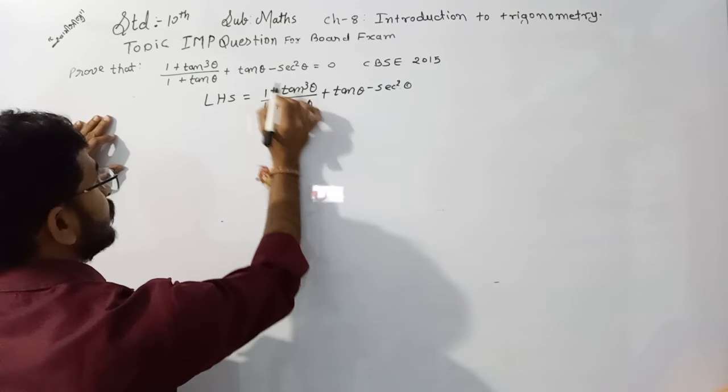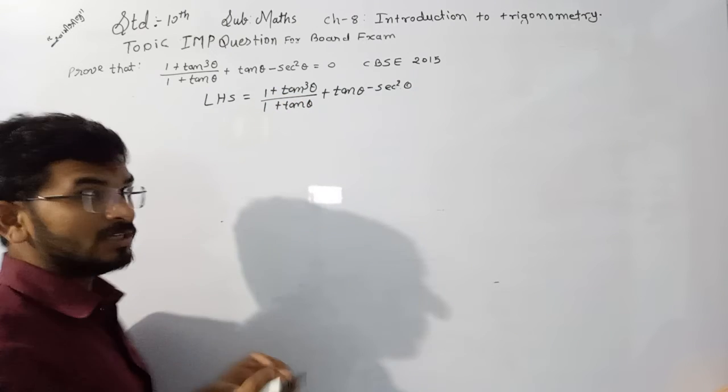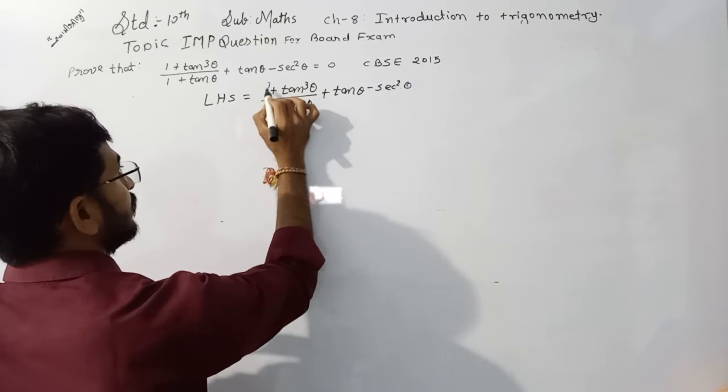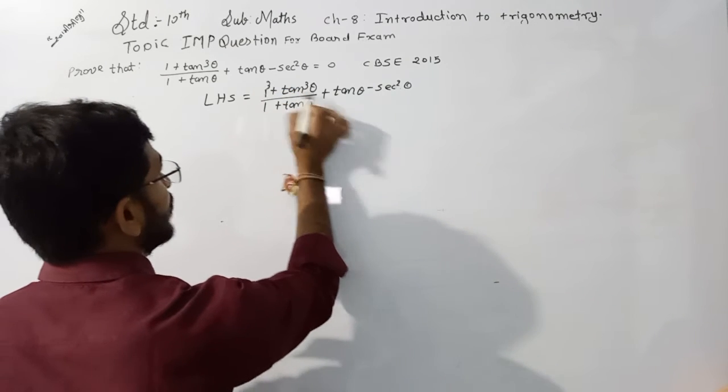First of all, for 1 plus tan cube theta, we take the cube root. Actually, cube of 1. So we write 1 cube plus tan cube theta.